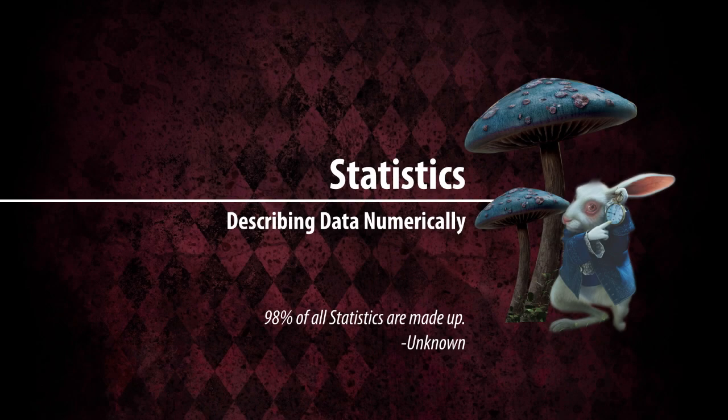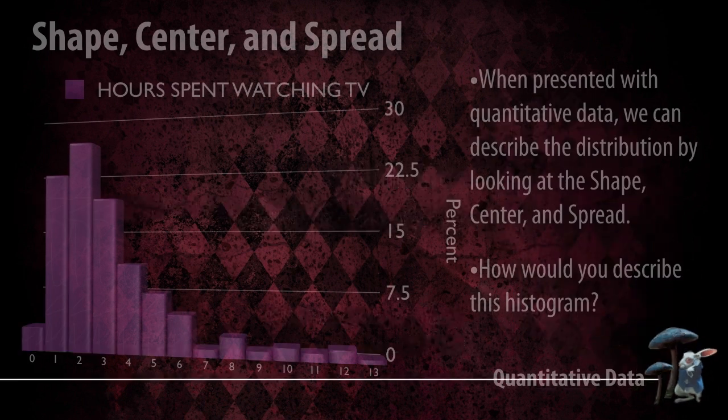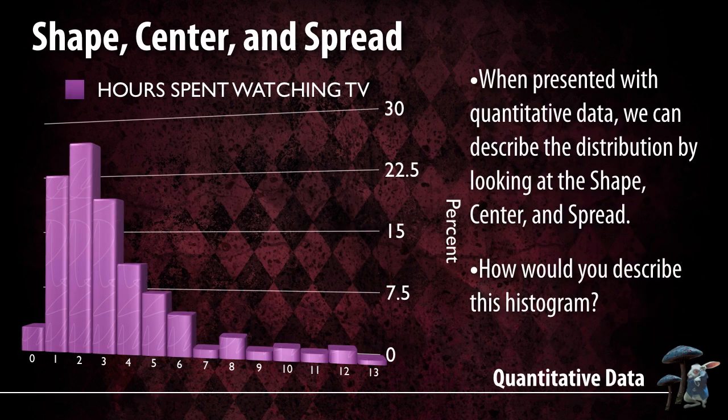Today we're going to be discussing some statistics. We're going to talk about how we describe distributions using a measure for shape, for center, and for spread. We're going to use numbers for some of these and just the basic physical shape of the object.